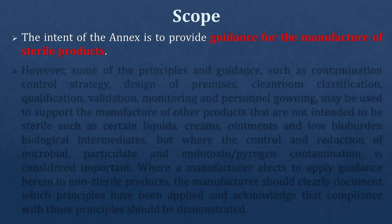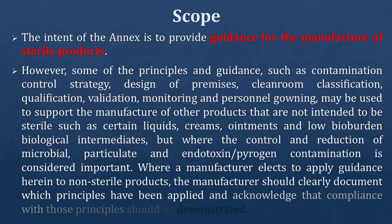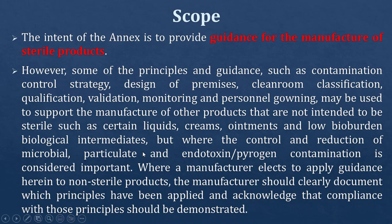Generally the intent or scope of this Annex 1 guidance is for sterile products only. However, some of the principles and guidance - such as contamination control strategy, design of premises, clean room classification, qualification, validation, monitoring, and personnel governing - may be used to support the manufacture of other products not intended to be sterile, such as certain liquids, creams, ointments, and low bioburden biological intermediates, but where the control and reduction of microbial, particulate, and endotoxin/pyrogen contamination is considered important. Where a manufacturer elects to apply this guidance to non-sterile products, the manufacturer should clearly document which principles have been applied and acknowledge that compliance with those principles should be demonstrated.